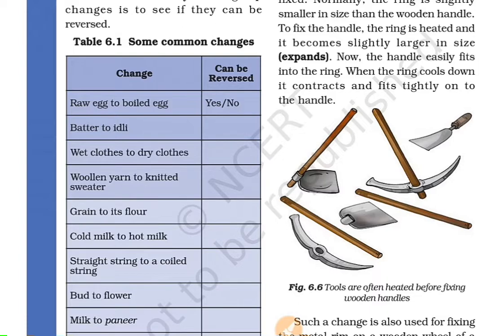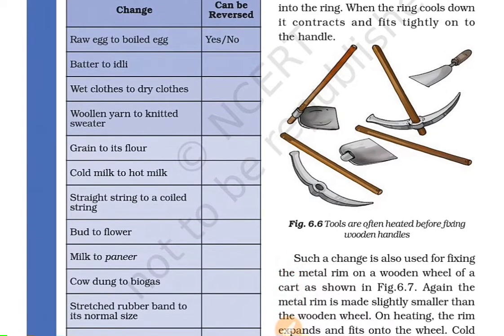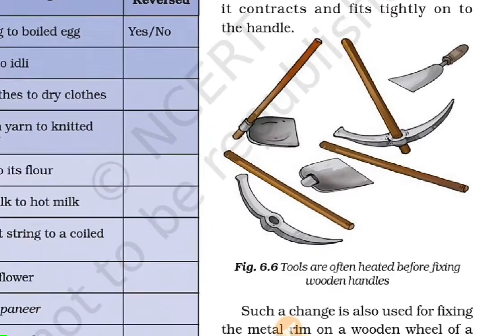The temperature rises to a red-hot temperature, and there is a change in size. Again, if you cool it with air or water, it returns to its original shape — it will contract. So: you add heat and it expands, then you cool it and it contracts.